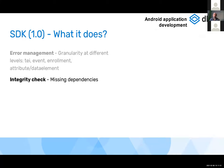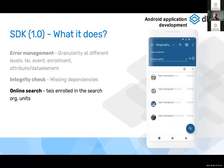Integrity check is particularly important. Sometimes the API delivers data with missing dependencies — for example, a data value not linked to a data element, or a program rule variable not linked to a data element or attribute. The SDK manages all these missing dependencies and removes errors from the API response.